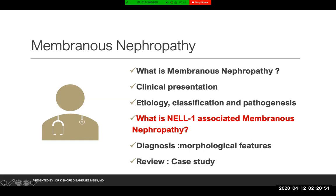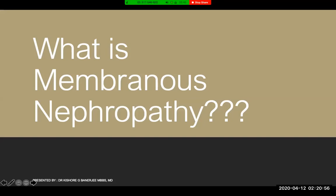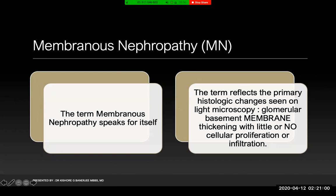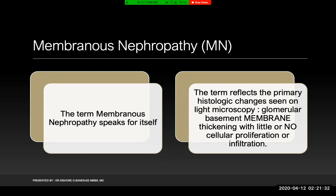What is membranous nephropathy? The name is made of two words — membranous and nephropathy. The term 'membranous' refers to the glomerular basement membrane, which in this case becomes diffusely thickened, and this is the primary histologic change seen on renal biopsy. This is distinct from membranoproliferative nephritis, which has both membranous and proliferative changes. In membranous nephropathy, there is no or little cellular proliferation or infiltrative change.